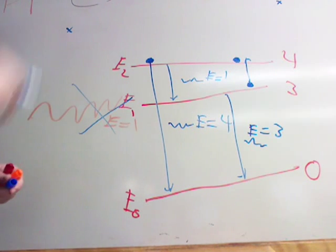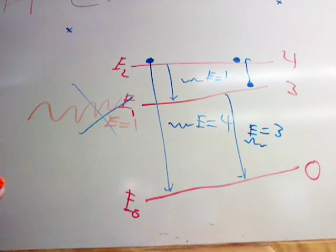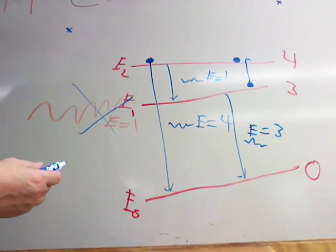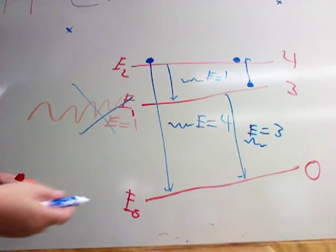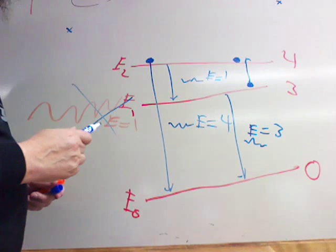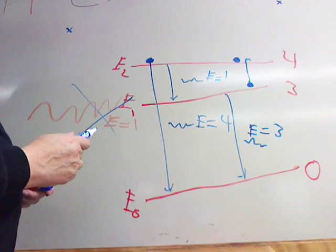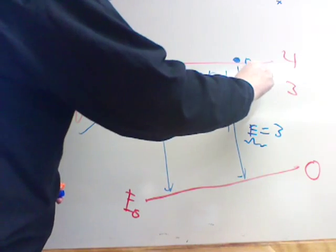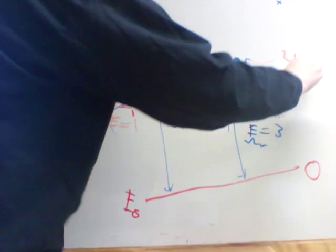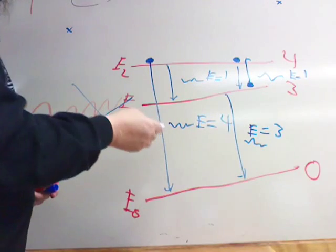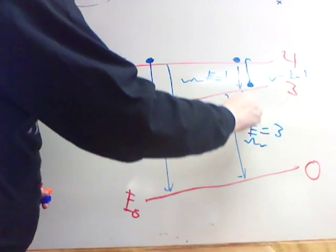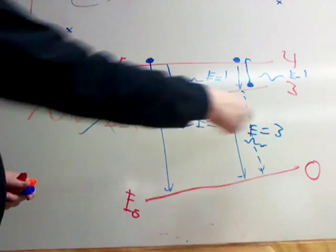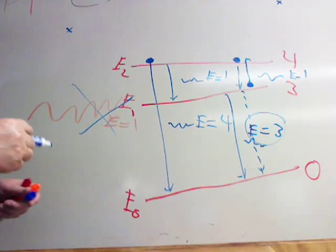That photon's been absorbed, it's been destroyed, and then it could fall back to the ground state emitting a photon of energy equal four, or it could fall back to the first excited state emitting a photon of energy equal one. And if it does this, we have an outgoing photon equal one, and if no new incoming photon comes, then it will fall down to the ground state and emit that photon again.